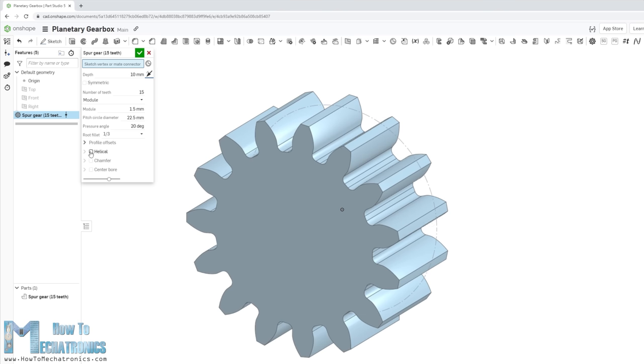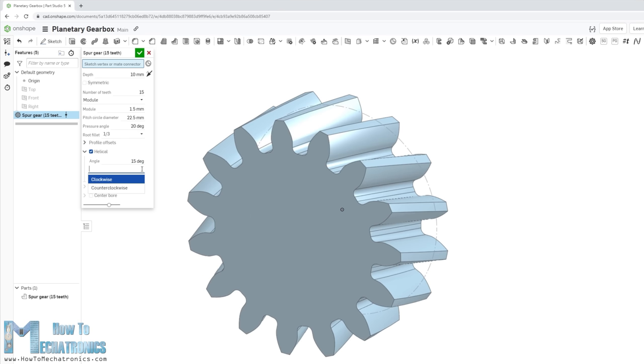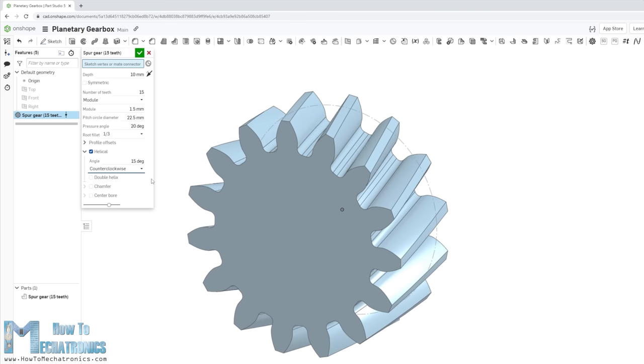We can choose the gears to be helical and select the angle and direction of the helix. Here we should note that in order for two helical gears to mesh, they need to have opposite direction of the helix, one clockwise and the other counterclockwise.